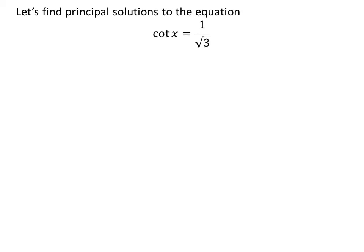Let us first find the principal solutions to the equation cotangent of x is equal to 1 upon square root of 3. We know the solutions to the trigonometric equation for which x is greater than or equal to 0 and less than 2 times pi are the principal solutions.